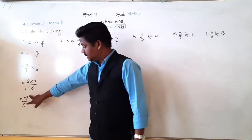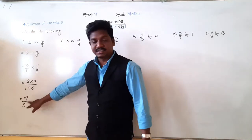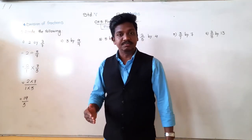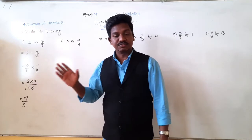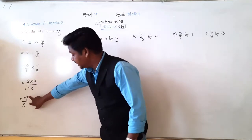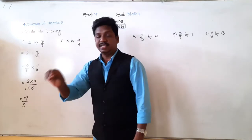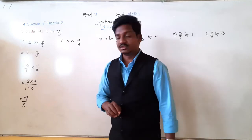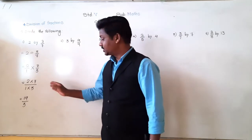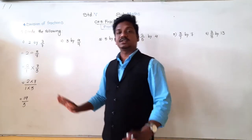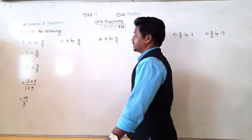Further, can we find its reduced term — the smallest term? Can 14 and 3 be simplified? Are they in any common table? No, 14 and 3 are not in any common table. So this is the final answer: 14 upon 3.